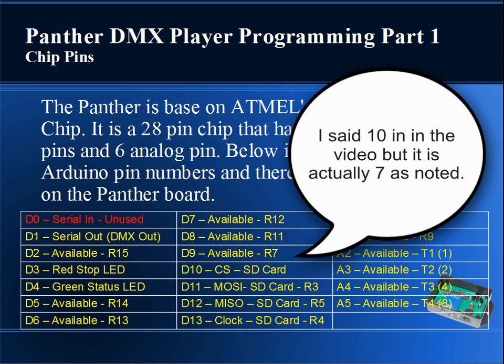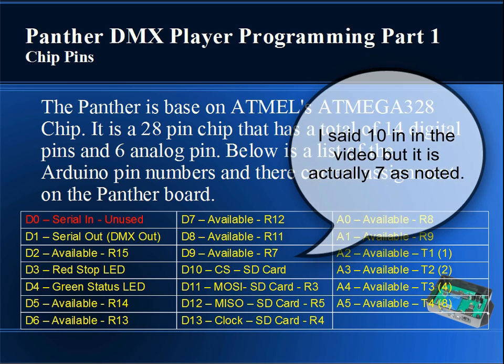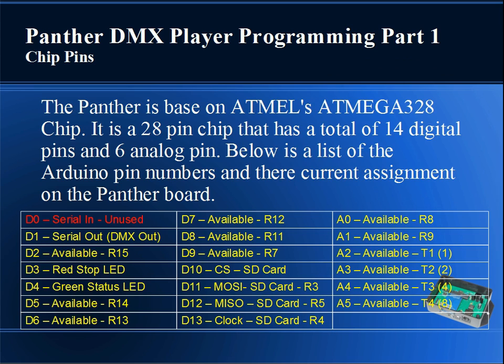Digital pin 10 is the chip select pin for the SD card and is unavailable for use. Digital pin 11, the master out slave in, is used by the SD card but is also available for use on R3 of the reserve header pin, should you have another device you want to hook up to it. Digital pin 12, the master in slave out, is also used by the SD card. Digital pin 13, the clock, is also used by the SD card and is available for use on the reserve header pin as R4.